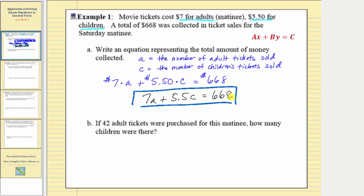For part b, if forty-two adult tickets were purchased for this matinee, how many children were there? Because we're told forty-two adult tickets were purchased, we know a is equal to forty-two. We'll now substitute forty-two for a in our equation and solve for c. Forming the substitution, we have seven times forty-two plus five point five c equals six hundred sixty-eight. Seven times forty-two equals two hundred ninety-four.